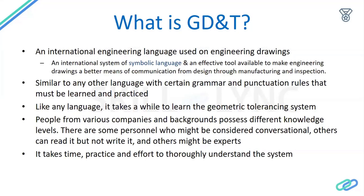One of the effective tools available to convey your design intent is an engineering drawing, and this engineering drawing can be made effective and mistake-proof by using Geometric Dimensioning and Tolerancing. Similar to any other language, GD&T has certain grammar and punctuation rules that must be learned and practiced. It takes time to learn, practice, and develop expertise in geometric dimensioning and tolerancing.